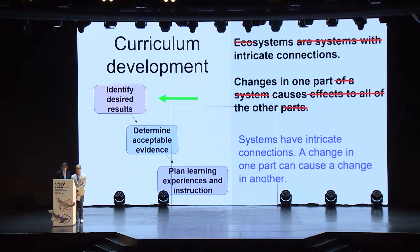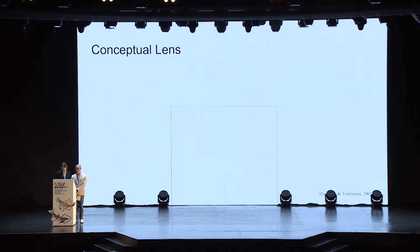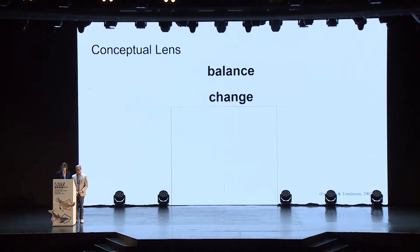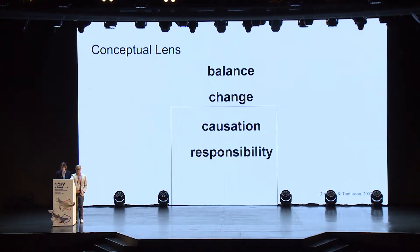That enduring understanding was: systems have intricate connections — a change in one part can cause a change in another. In addition, conceptual lenses added direction and depth to the enduring understanding. They also served to constrain the chosen learning experiences and became part of the guiding questions for the inquiry, such as: how is an ecosystem balanced, and why do they change?